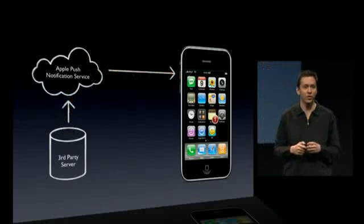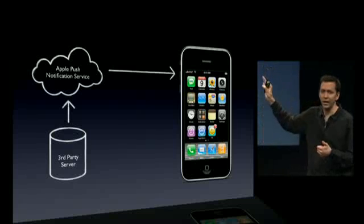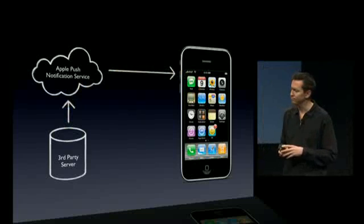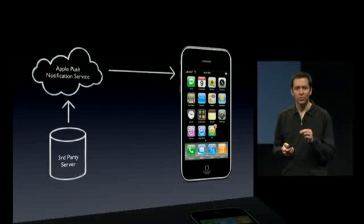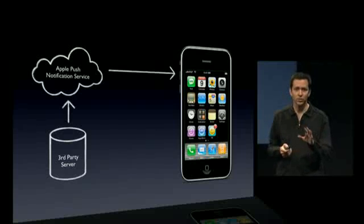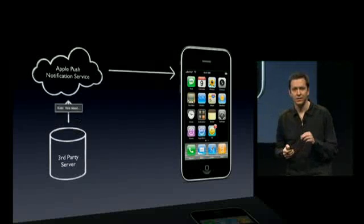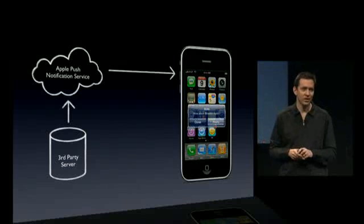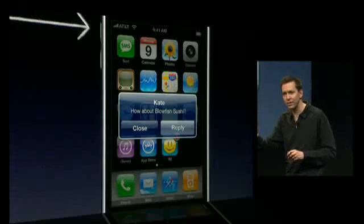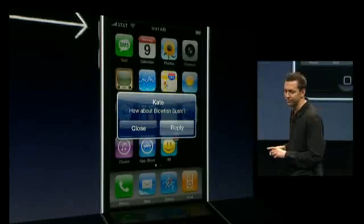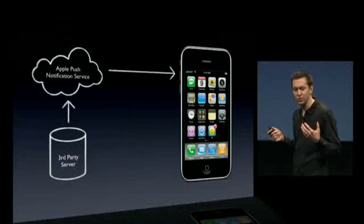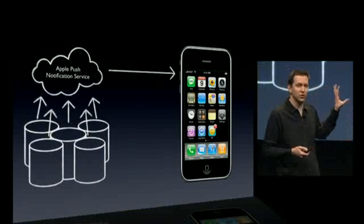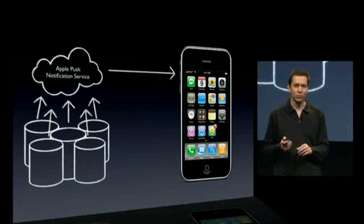There are three types of notifications you can push. One is a badge — you can badge how many items are waiting for the user. You can also send audio alerts, which can be whatever sound you want for your application — it's customizable. You can also send text alerts, which appear the same way that SMSs appear, and you can even add a button so that if the user taps it, they'll launch right into your application. The reason we're doing these, and the nice part about it, is it scales to all of these third-party services that want to take advantage of it.